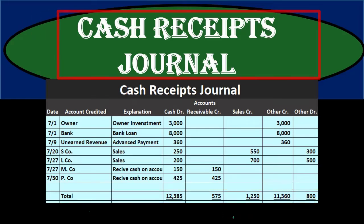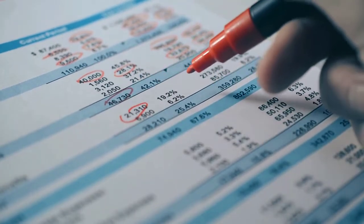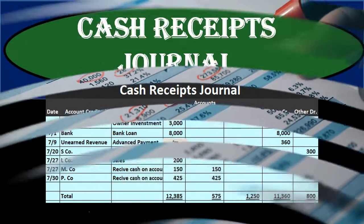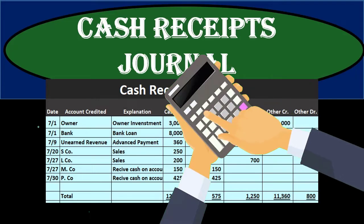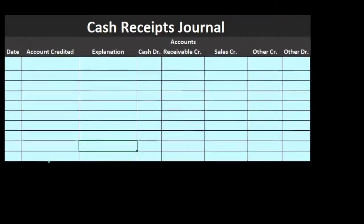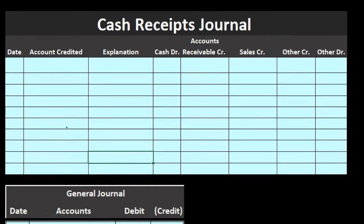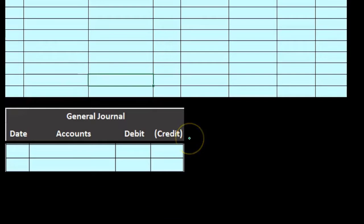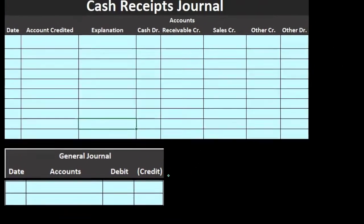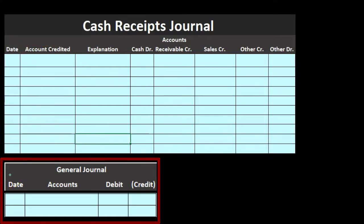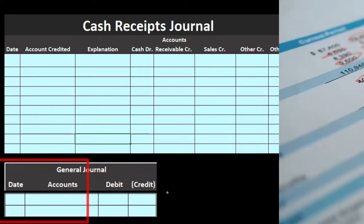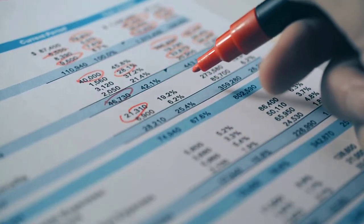The cash receipts journal is most effective when we have many similar transactions. We record all transactions for the time period — in our case the month — then sum them up and record one journal entry at the end. So we do a cash receipts journal and then one general journal entry, rather than many separate journal entries throughout the period. Just one journal entry at the end for the entire month's worth of data.